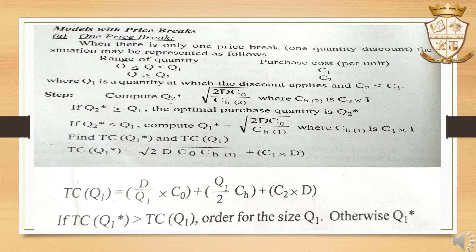If Q2 star is greater than Q1 — where Q1 is already provided, say equal to 500 units — then using C2, we calculate the same equation with CH2. That total cost is compared using the normal method for ordering quantity, and the optimal quantity will be Q2 star.